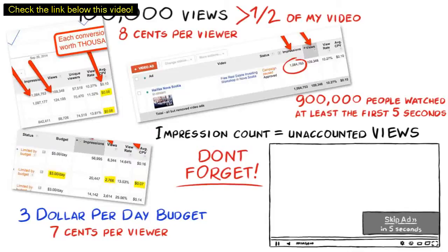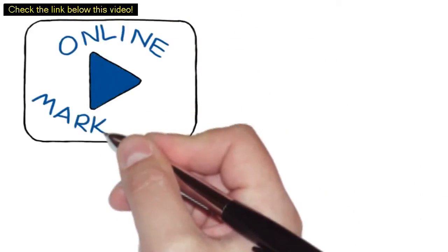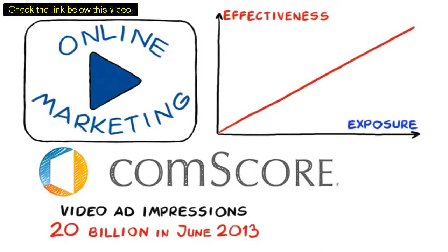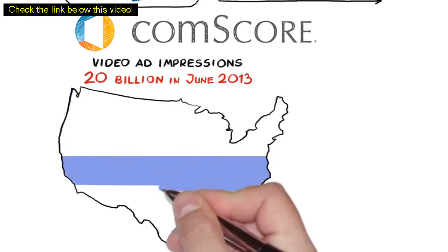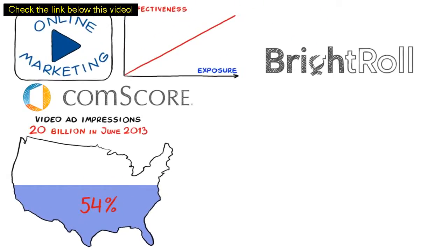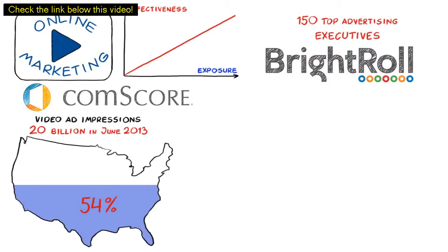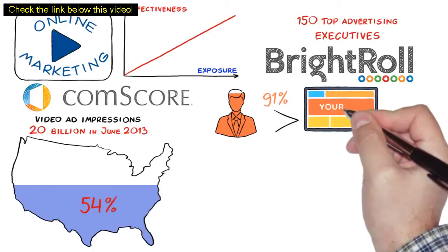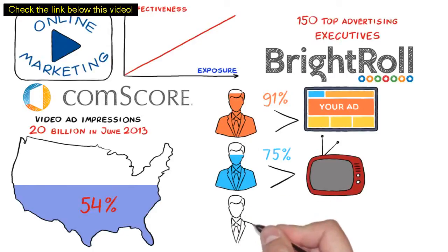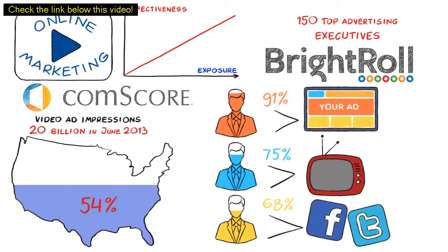I could show you hundreds of case studies like these, but I'm sure you get the point. Online video marketing is effective when it comes to exposure. According to a Comscore report, video ad impressions surpassed 20 billion in June 2013. Video ads reached nearly 54% of the total U.S. population an average of 121 times during the month. In a BrightRoll study surveying 150 top advertising executives, 91% believe online video is equally or more effective than display advertising, 75% believe it is more effective than television, and 68% believe it is more effective than social media. In short, online video advertising is growing many times faster than TV, search, and most other digital markets. And if you don't have this secret traffic source in your arsenal, then you are simply being left behind.